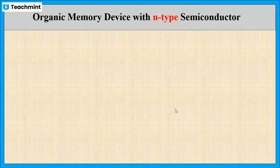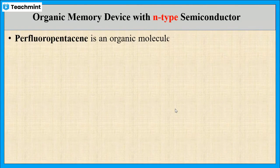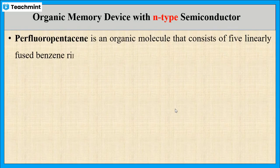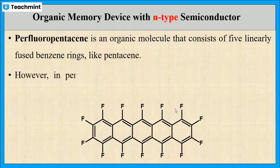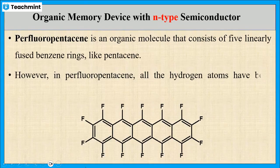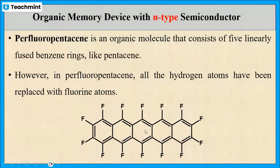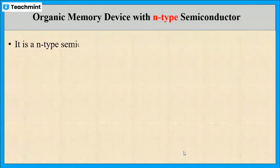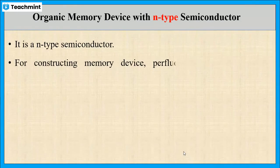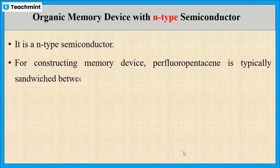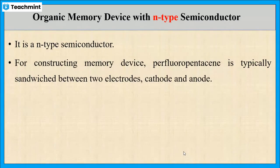Now let us see N-type semiconductors used in organic memory devices. Perfluoropentacene is an example of an N-type semiconductor. The structure is the same as pentacene, except all the hydrogen atoms are replaced with fluorine atoms. In order to construct the memory device, perfluoropentacene is sandwiched between two electrodes — cathode and anode.